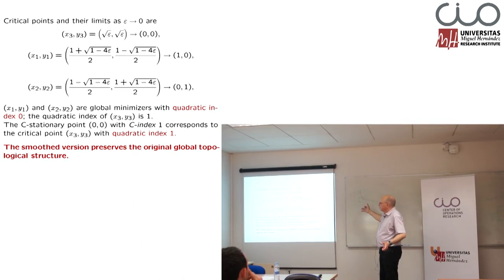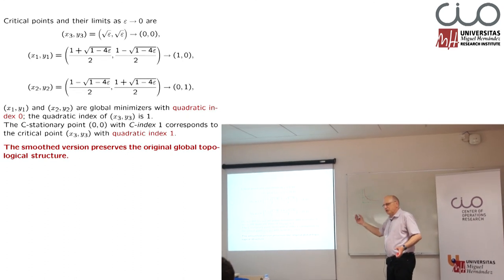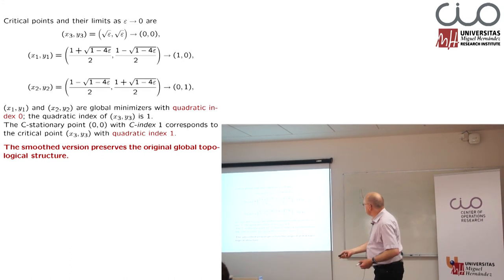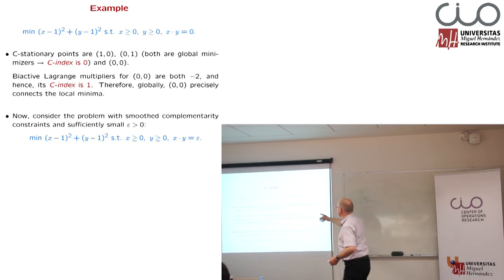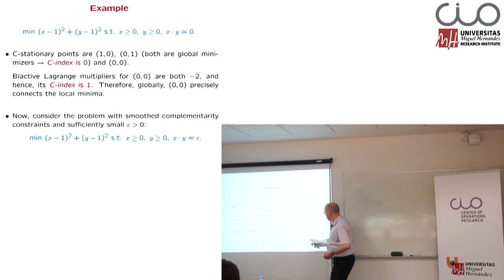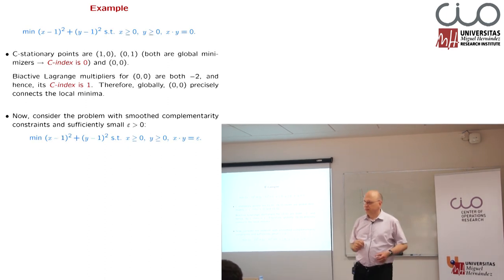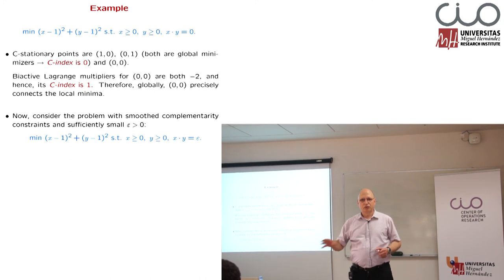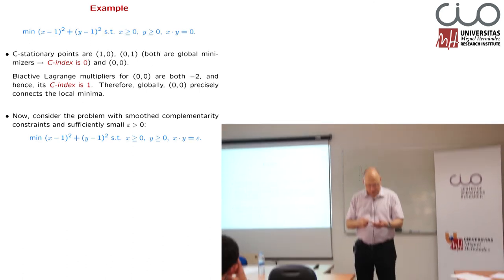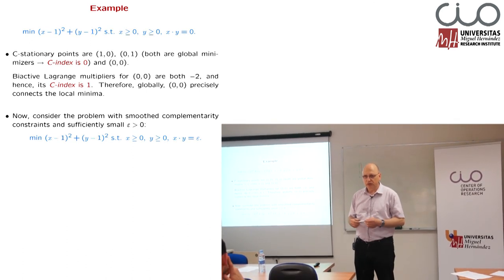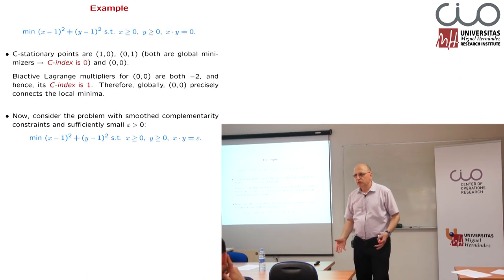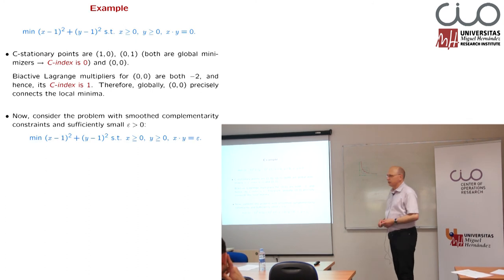It is interesting to ask the question under which conditions this topological structure is maintained, although we are disturbing the original problem — if we go back here and disturb the original problem in such a way that it becomes a standard optimization problem. With this, I would like to finish. These are results which we put together in several papers together with Bernd Jung and Vladimir Shikhman. But, as I said in the beginning, I would like to give you an overview lecture on this complementarity constraints problem. Thank you very much.